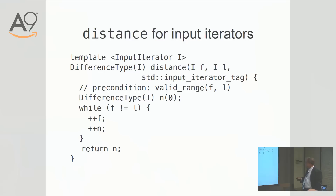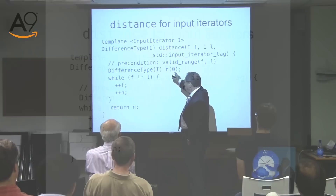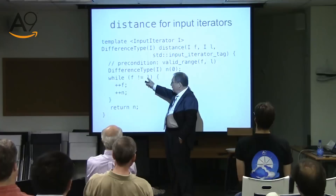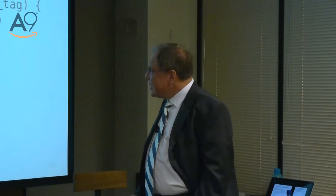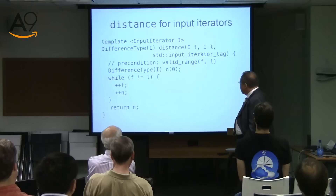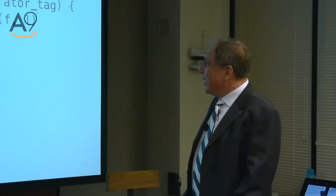A simple example of a function which works even for input iterator is called distance — that's how you find the distance between two different positions. You start with zero, then go while they do not become equal, incrementing first and incrementing the count. When they become equal, you output the count. This is probably the simplest possible algorithm for iterators — finding a distance between two points — but even that requires understanding what a difference type is.